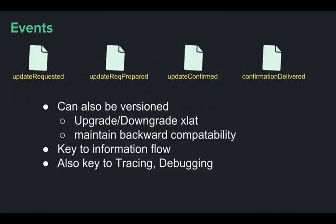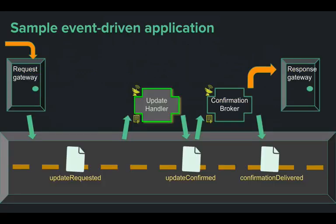Events can also be versioned. They're the key to the information flow. The metadata from the original update request gets passed along between all these events as they get published, so you can embed whatever logic you want in there. This makes events the key to tracing and debugging.